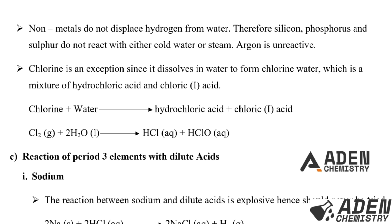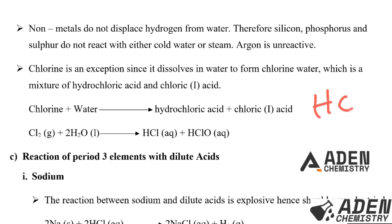Non-metals do not displace hydrogen from water; therefore silicon, phosphorus, and sulfur do not react with either cool water or steam. Argon is unreactive. Chlorine is an exception since it dissolves in water to form chlorine water, which is a mixture of hydrochloric acid and hypochlorous acid. The reaction is: Cl₂ + H₂O → HCl + HOCl (hypochlorous acid). Note that hypochlorous acid can be written in two equivalent ways.